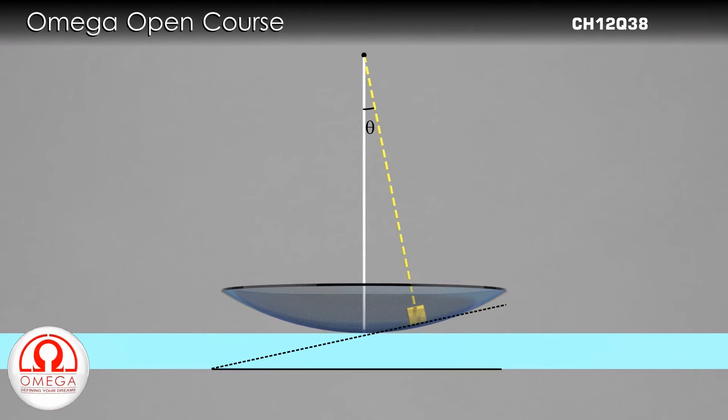At this point, the surface too makes an angle theta with the horizontal. Therefore, the component of gravity acting along the surface is mg sin theta.